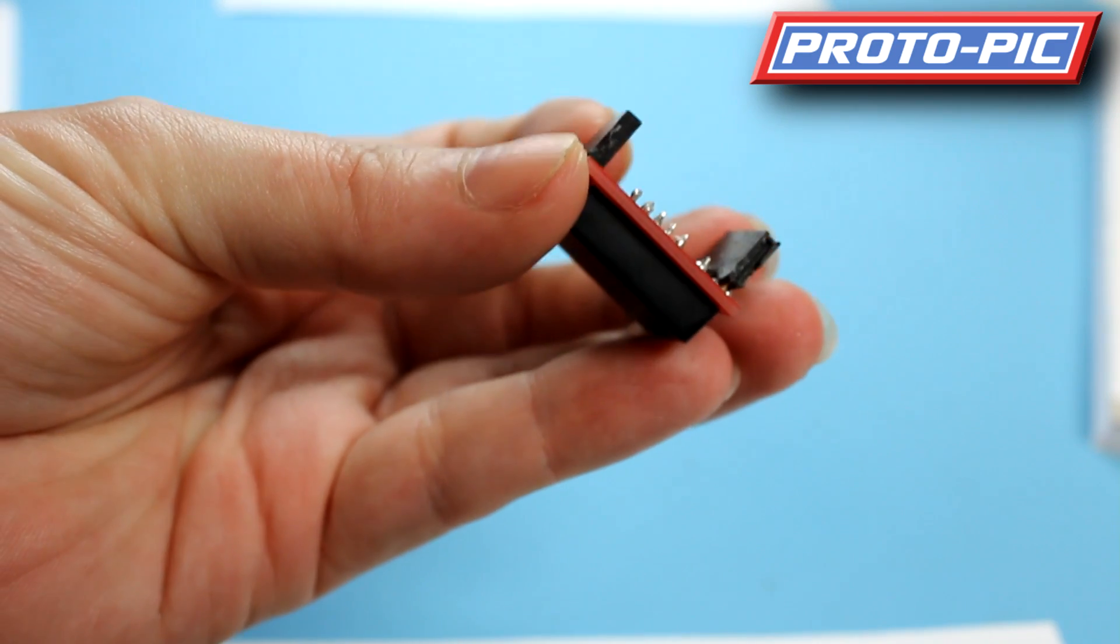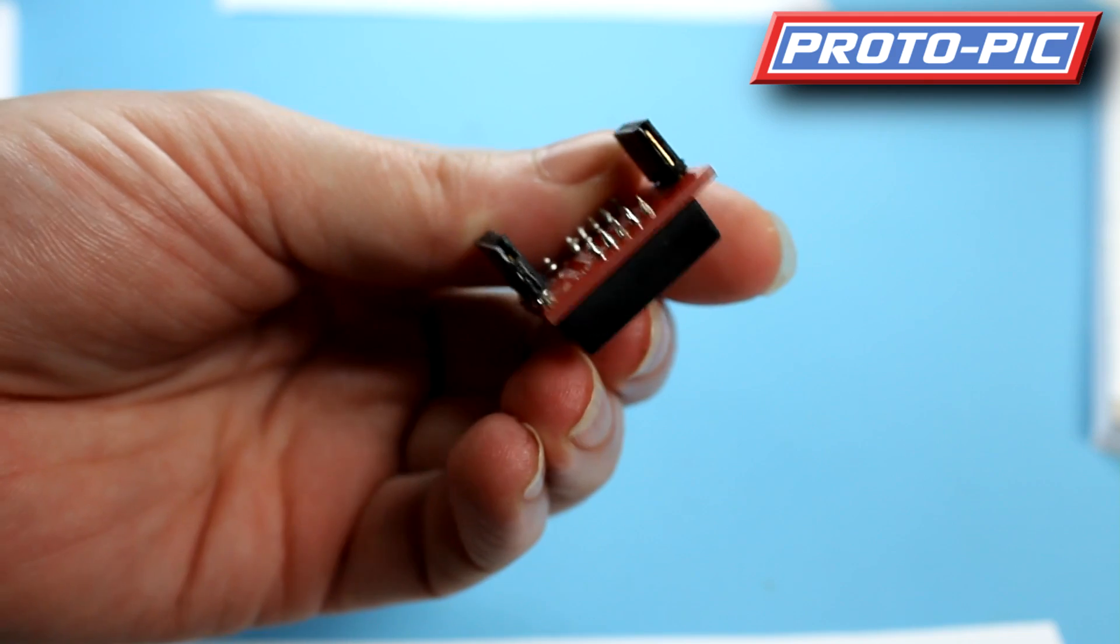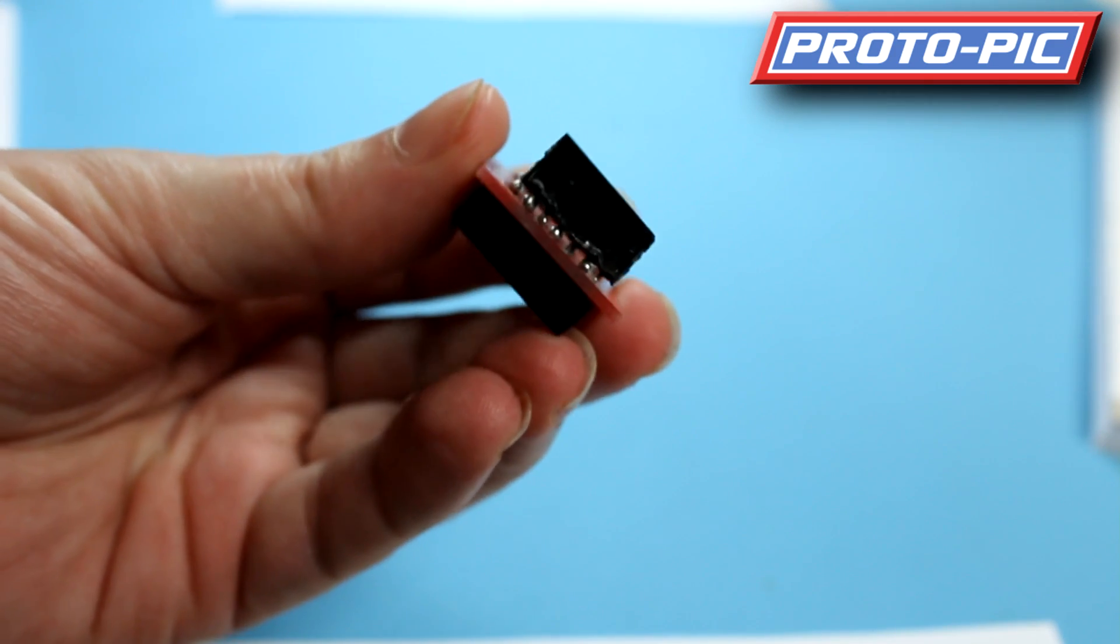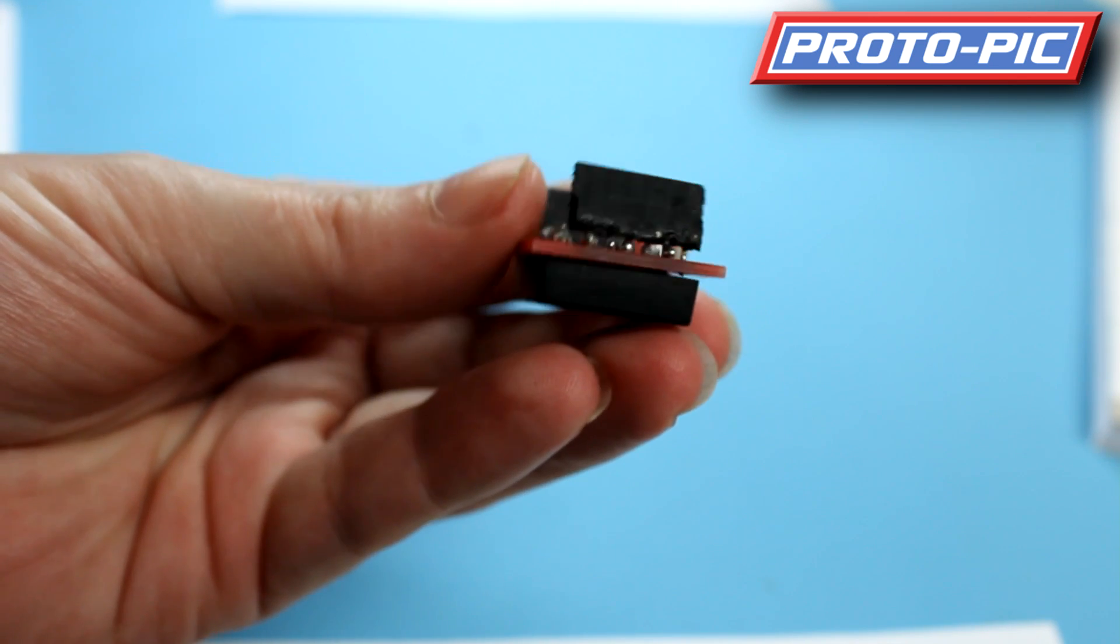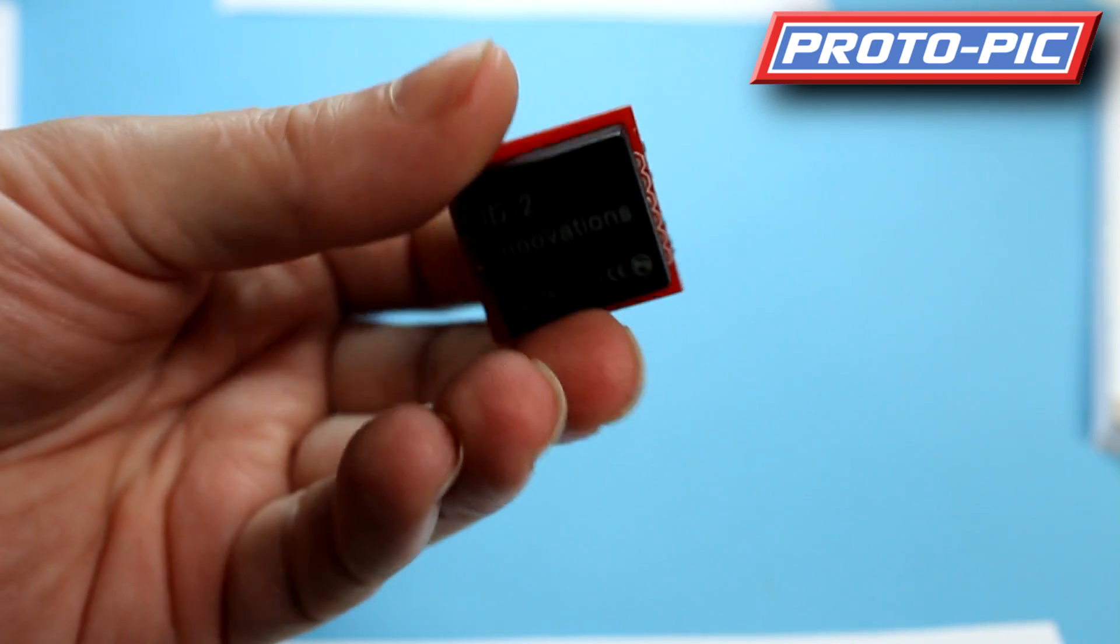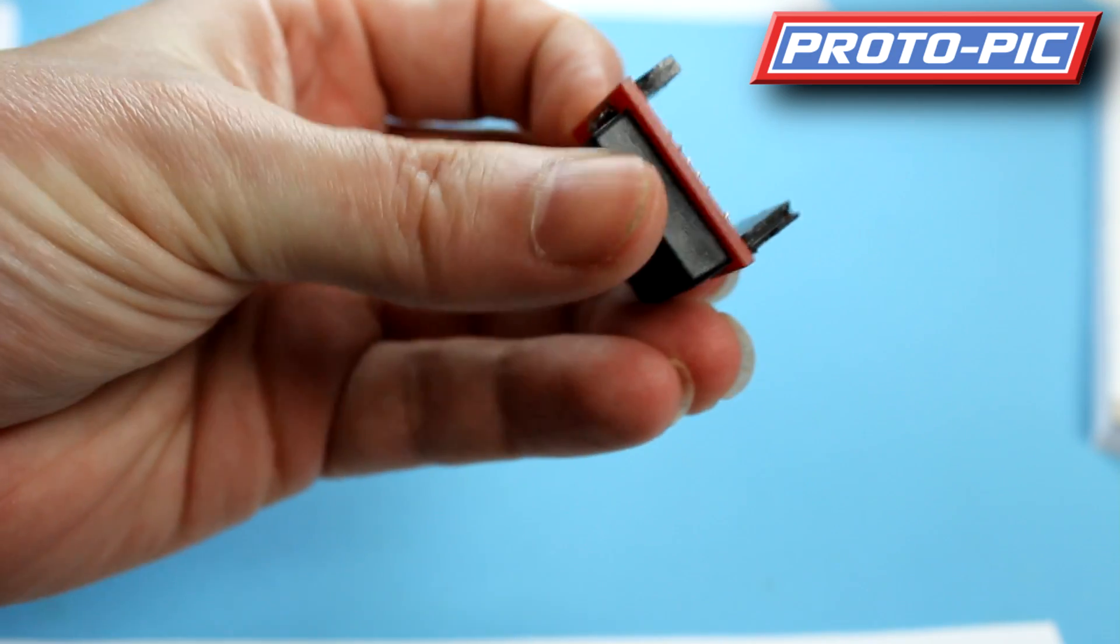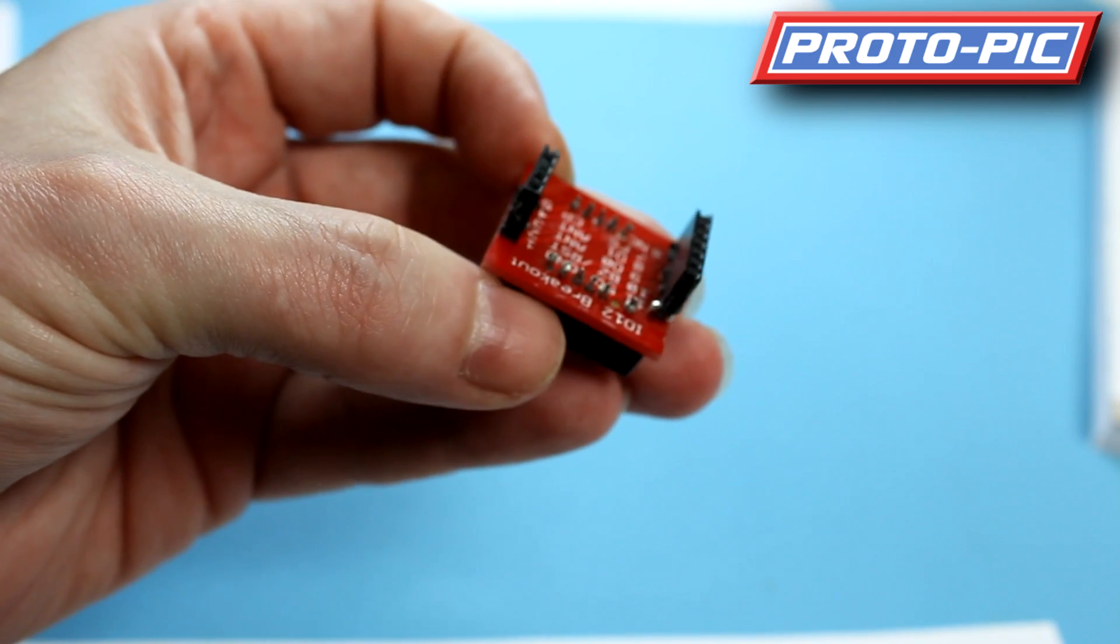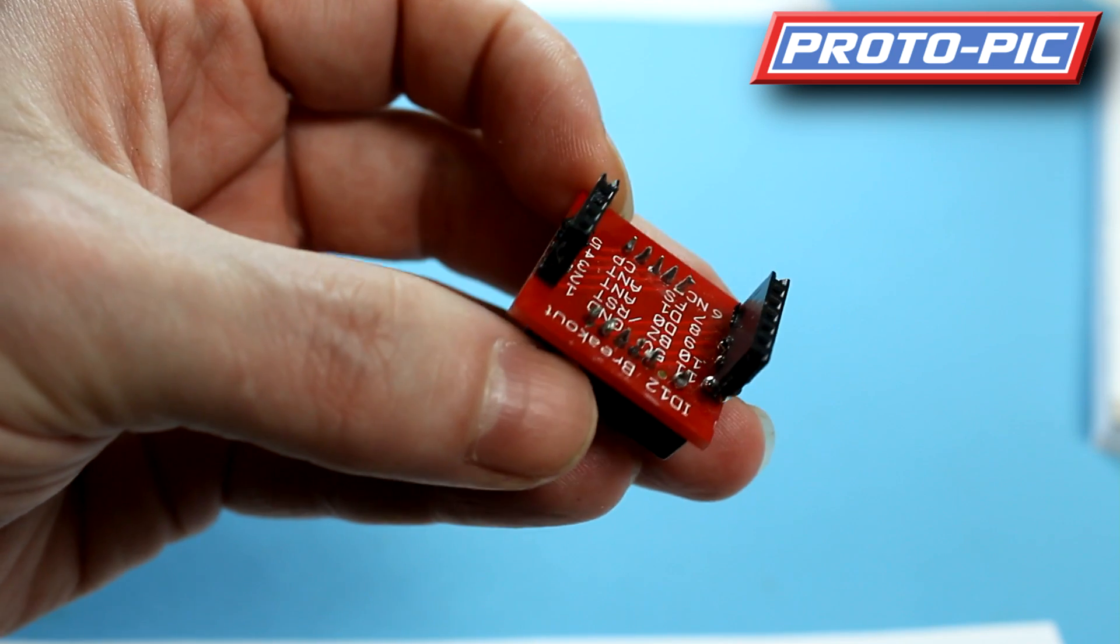Now as you should be able to see in there, there's some rather shocking examples of soldering. These headers on the end, somebody's tried to solder those on after they've soldered the ID-2 onto the top of the breakout board. And you see the pins in there are somewhat poorly soldered.